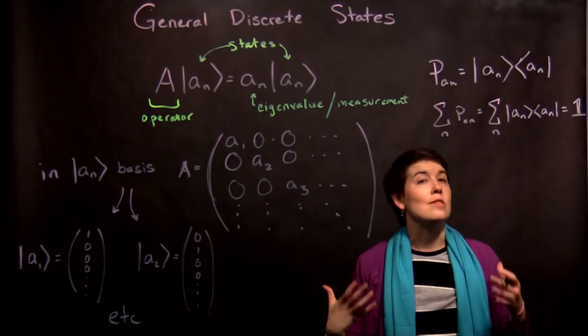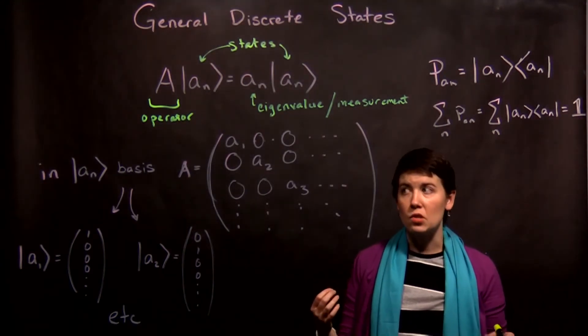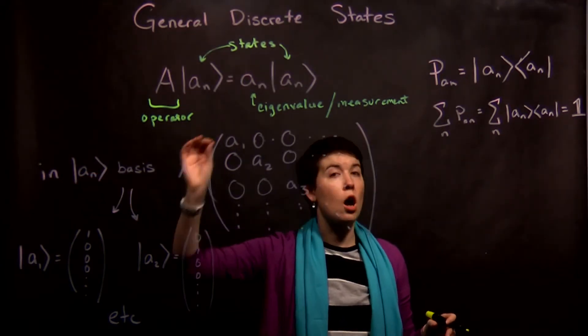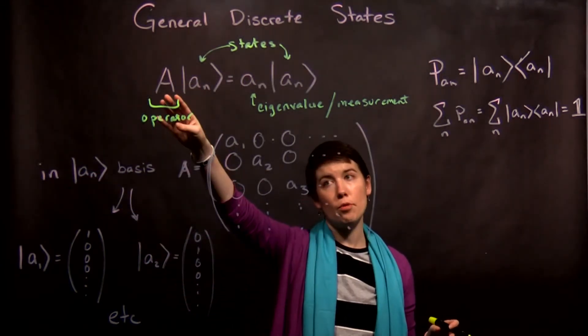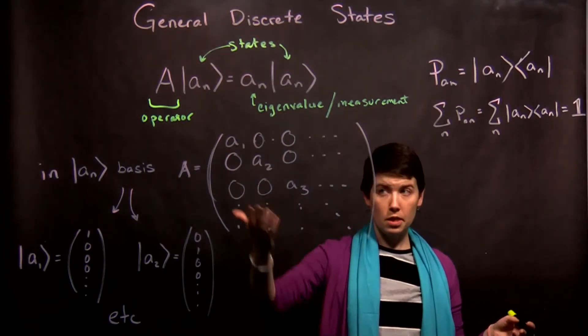So we can work in different bases. And if we are working in the basis where our basis vectors are the eigenvectors of our operator, then our operator is diagonal in the basis.